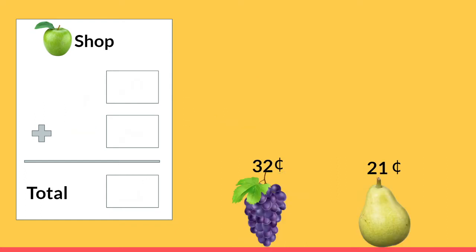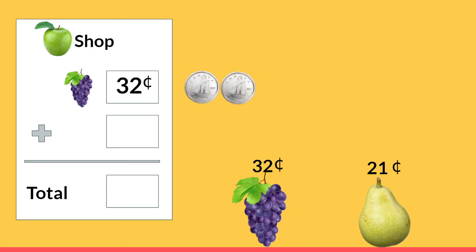What if we were going to buy some grapes and a pear at the fruit shop? Let's buy some grapes and write the amount on the receipt. The grapes cost 32 cents. What would that look like in coins? We could use dimes — count with me, and when we count dimes we count by 10: 10, 20, 30. Now we need two more and we're going to use pennies: 31, 32. That's 32 cents.